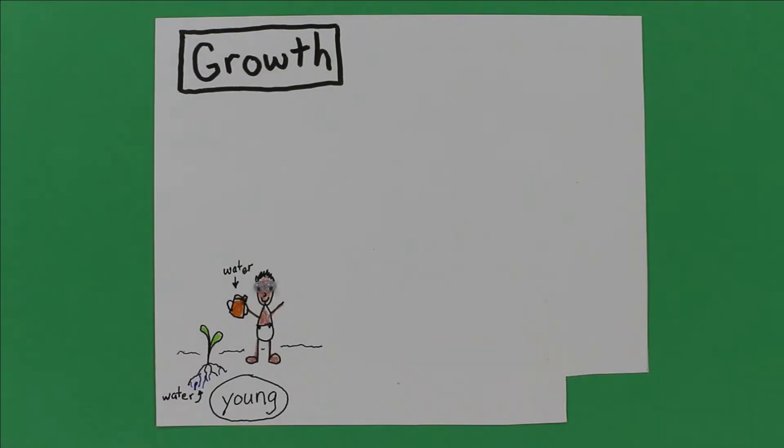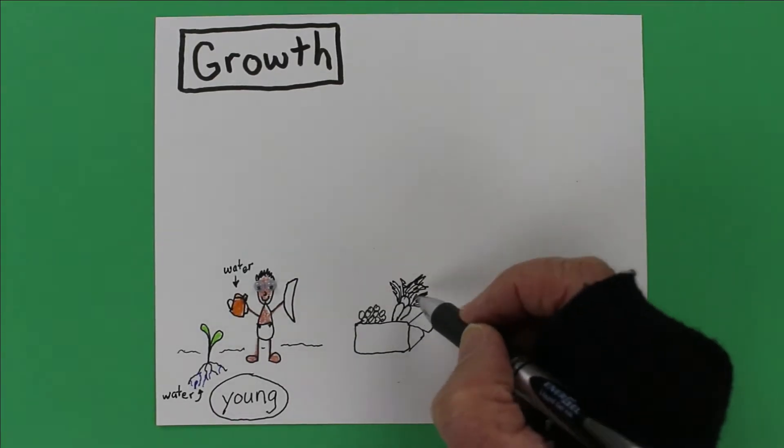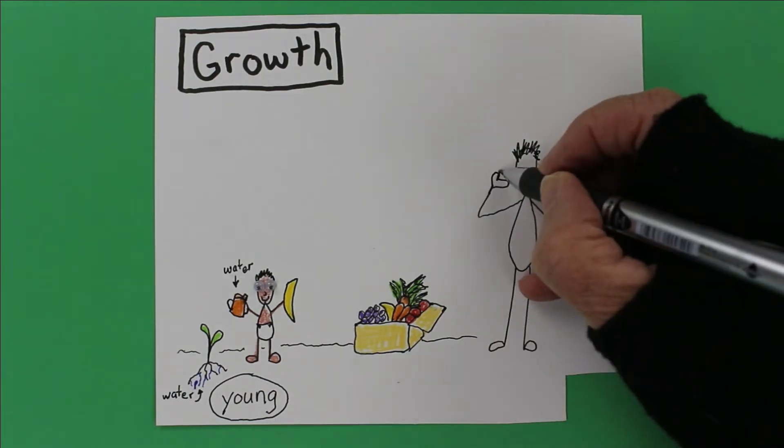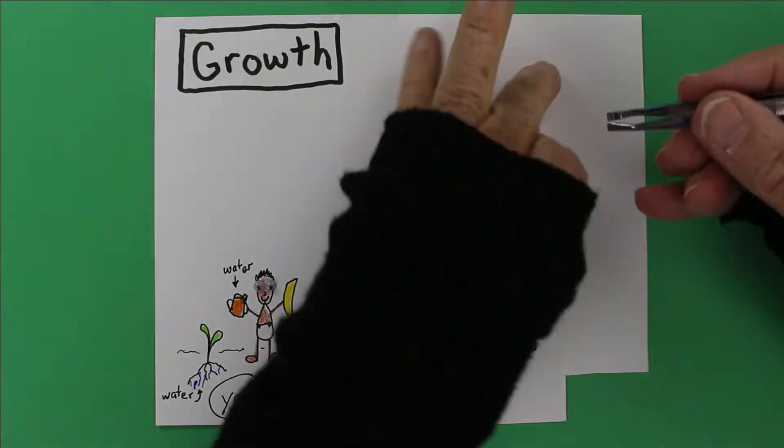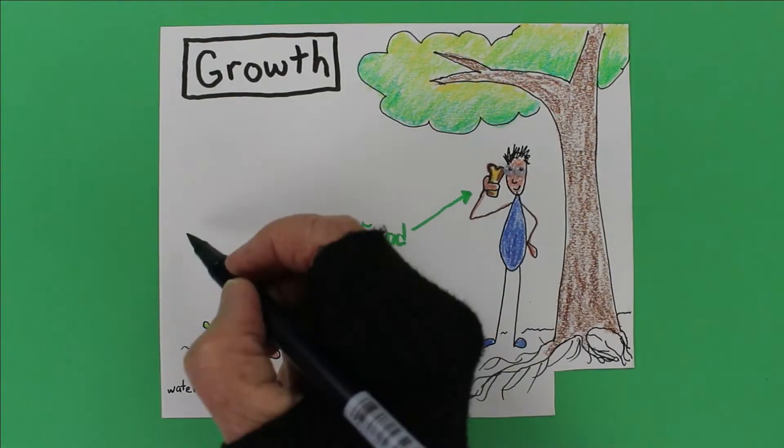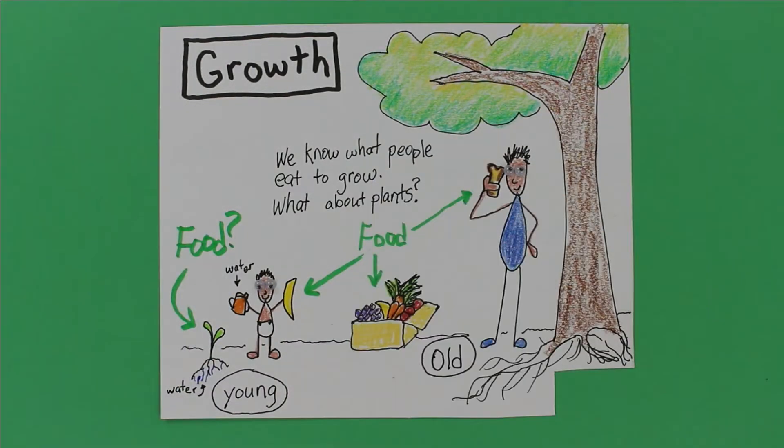The toddler gets water from a sippy cup. The seedling sucks liquid water up through its roots and takes up water vapor through pores in its leaves. The toddler gets carbs, proteins, and fats from food and voila, a full-grown human. But what about the seedling? It grows into this big gorgeous tree. But what did it eat to do that?